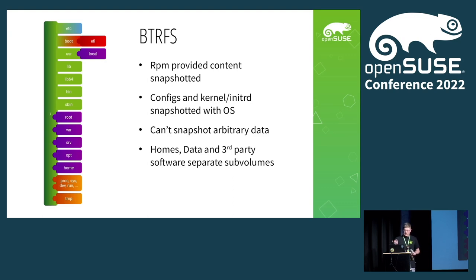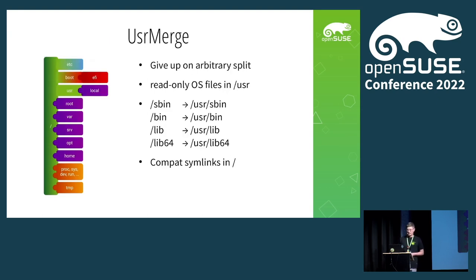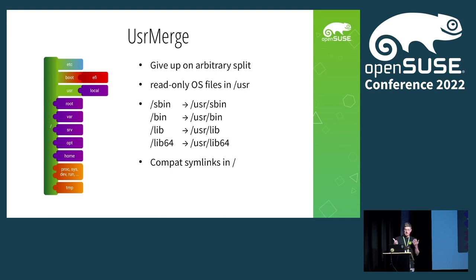I'd really like to simplify all of that, and a first step is the user merge — getting rid of all those separate OS locations and putting them all in /usr. That's a step other Linux distributions already did a decade ago: take all the OS files considered read-only and put them in /usr. The old locations won't go away — you still have /sbin, /bin, /lib64 — but there are symlinks to their counterpart in /usr. With that step we make the OS already a bit cleaner, with the goal of getting all OS files into /usr.